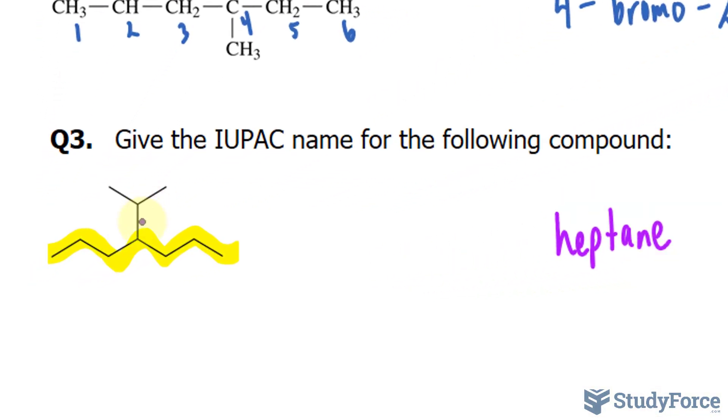Then we have this substituent found right here. And it consists of 1, 2, 3 carbons. It occurs at the 1, 2, 3, 4th carbon. So whether you started from here or from here, it's still going to occur at the 4th carbon. We'll write down 4. And this substituent, this 3-carbon structure here, is called isopropyl.